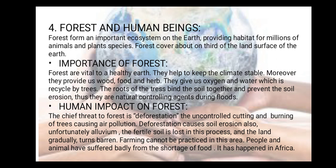The difference between animals and plants: animals exhale carbon dioxide, while plants inhale carbon dioxide and exhale oxygen. So plants provide us with oxygen. The roots of trees also bind the soil together and prevent soil erosion, and act as a natural controlling agent during floods.